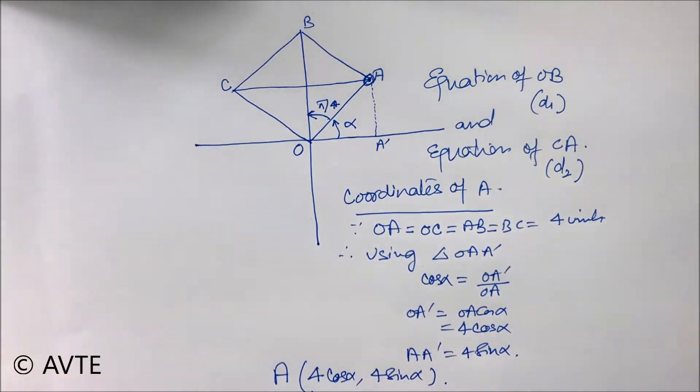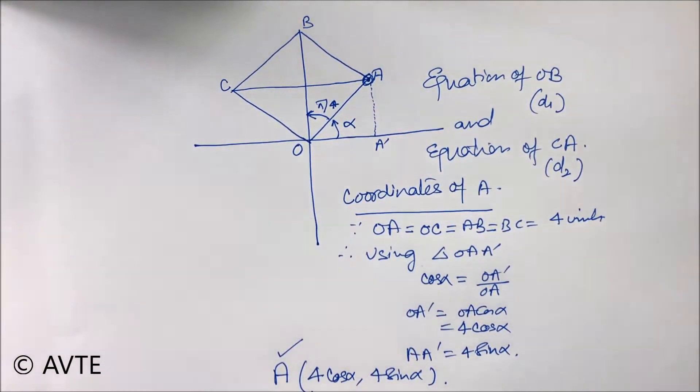This is very important that now we have the coordinates of A which are four cos alpha is the x component and four sine alpha is the y component.